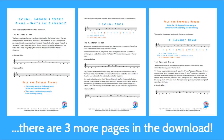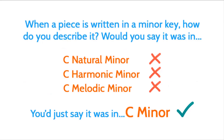I've created a resource for this tutorial, which you can see on the screen. You can download this from my Accelerando Piano website and use it as a reference whenever you like. Now, there's one important thing I want to mention from the outset: a piece of music written in a minor key may use notes from all three forms of the scale at different times throughout the music. So you can't describe a piece as being in C harmonic minor or C melodic minor — you'd just say it was in C minor.